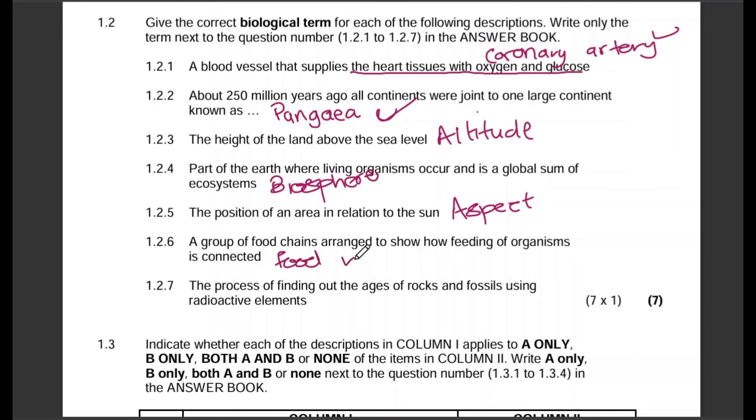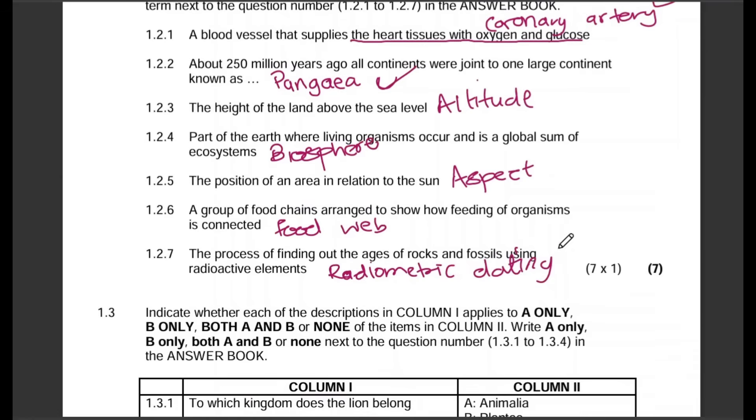Question 1.2.6: A group of food chains arranged to show how feeding of organisms is connected is a food web. Question 1.2.7: The process of finding out the ages of rocks and fossils using radioactive elements, that will obviously be radiometric dating. That's it.